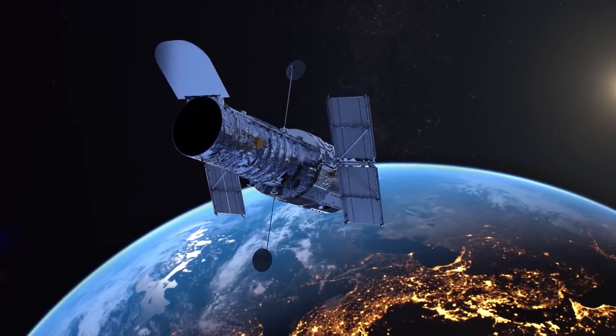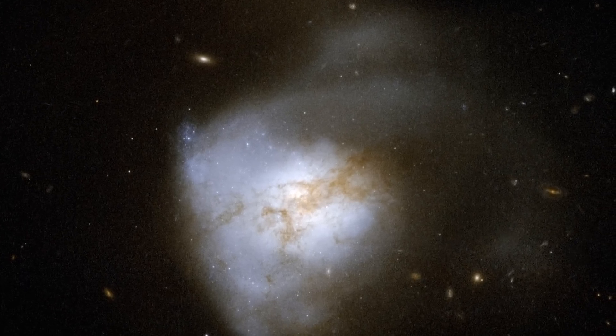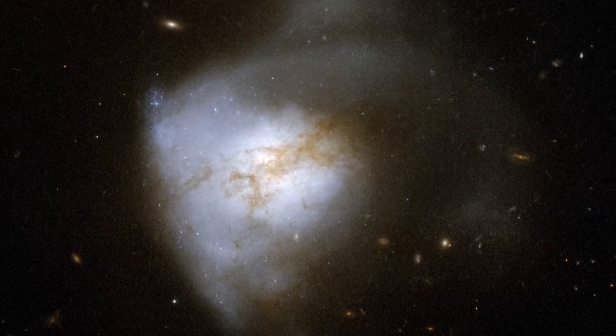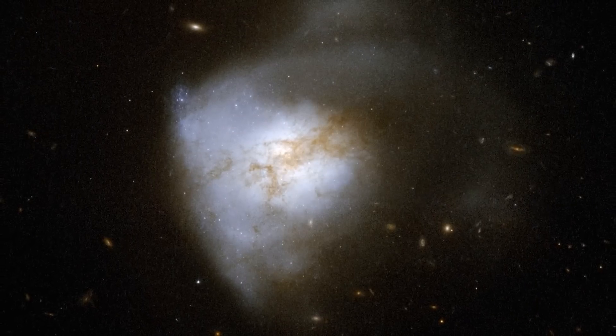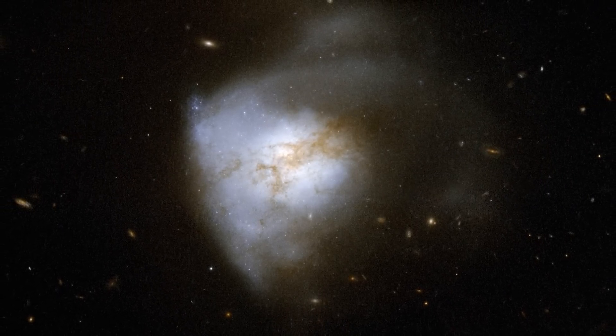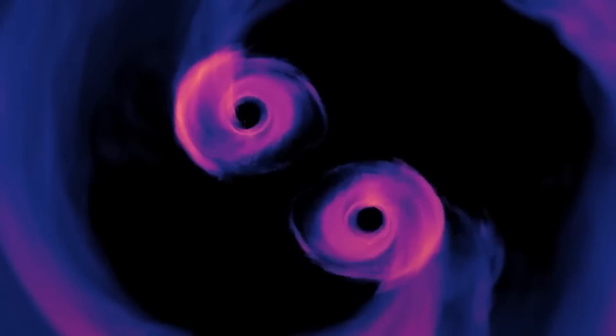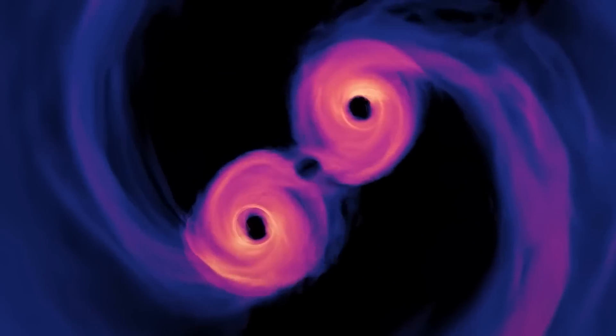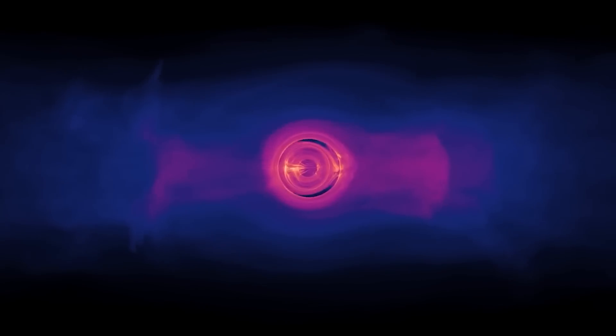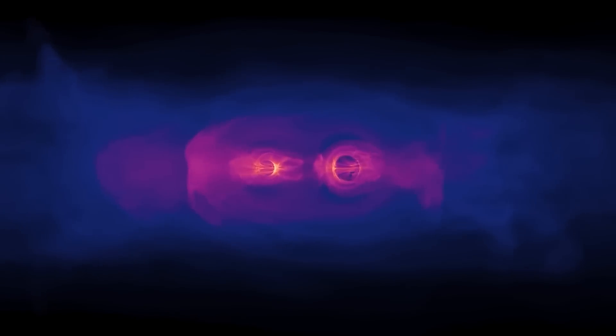The Hubble Space Telescope, a veteran of space observation, was instrumental in providing initial glimpses into the heart of ARP-220. Using its capabilities to observe in the infrared, Hubble peered through the thick dust cloaking the galaxy, revealing the dual cores of the parent galaxies. These observations presented us with the incredible sight of two supermassive black holes lurking within the depths of ARP-220, further underscoring the intricacies of this galactic merger.